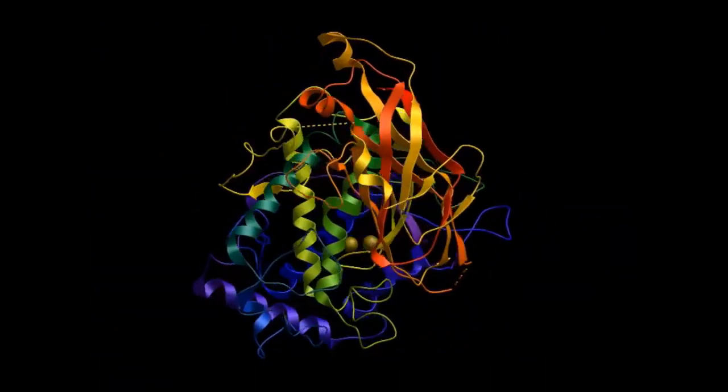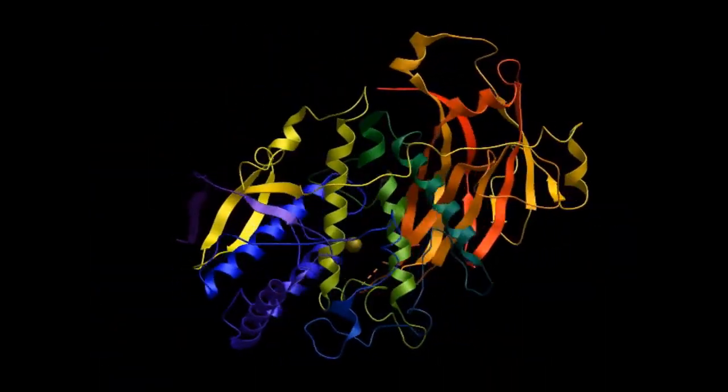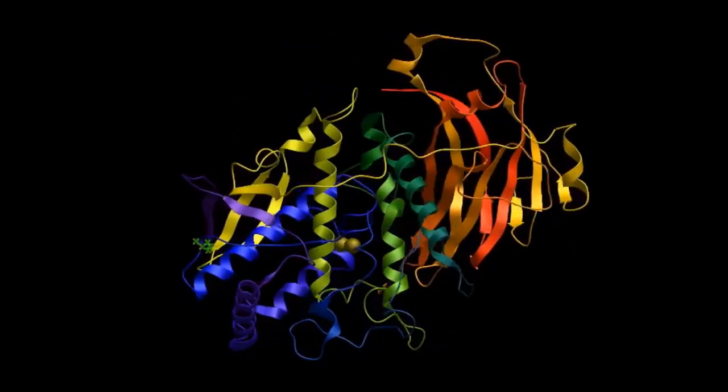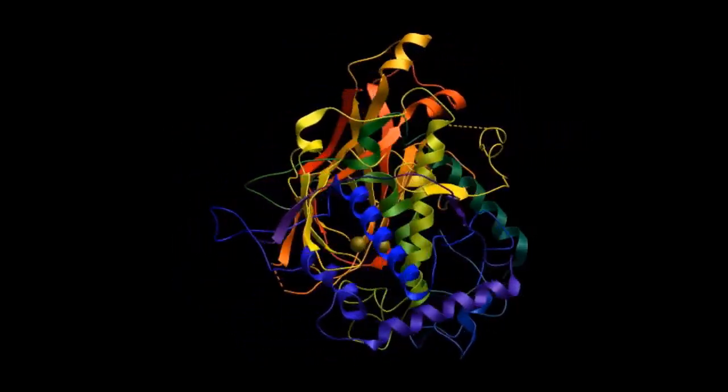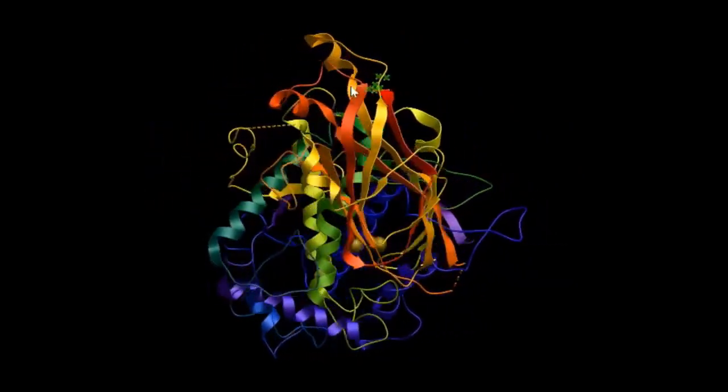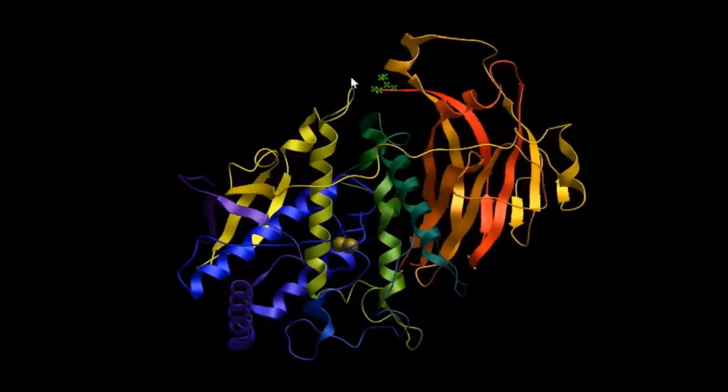Here the ribbon diagram is color-coded by the N-terminal end in a dark violet color, and the C-terminal end has a warm red color. This allows you to follow along the amino acid sequence.